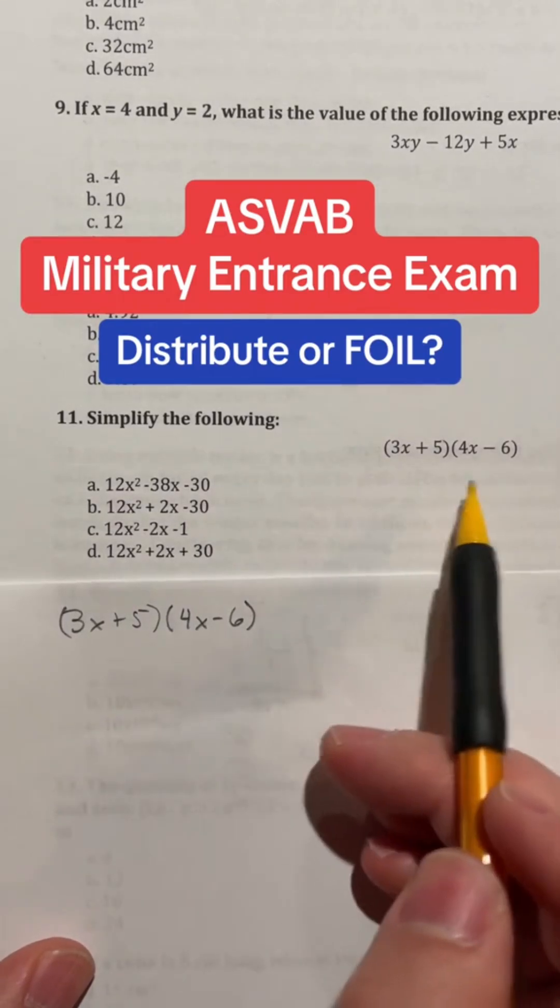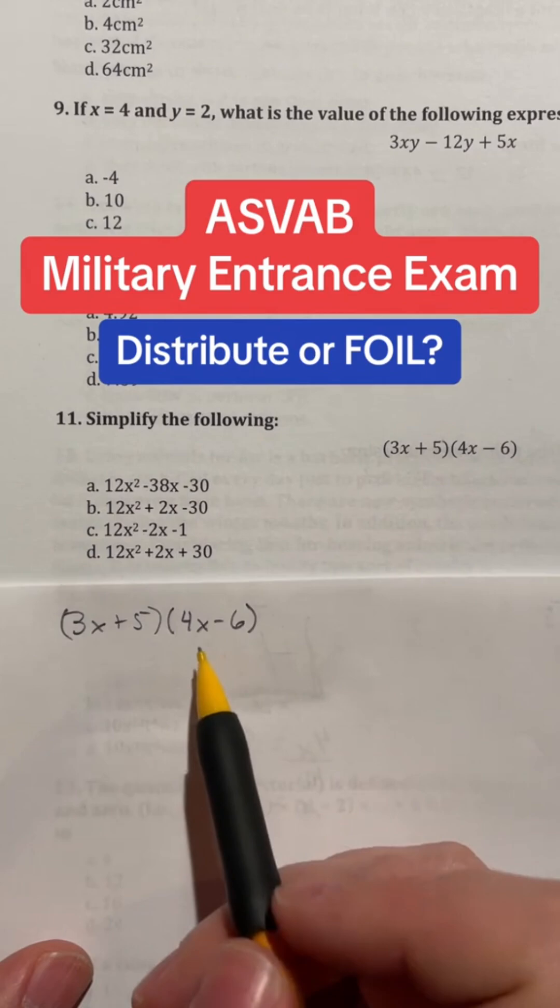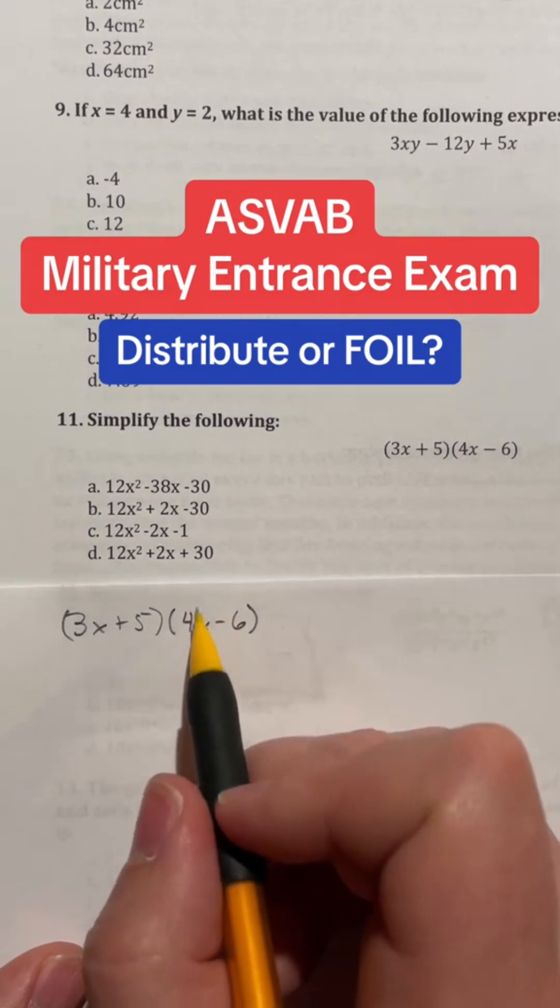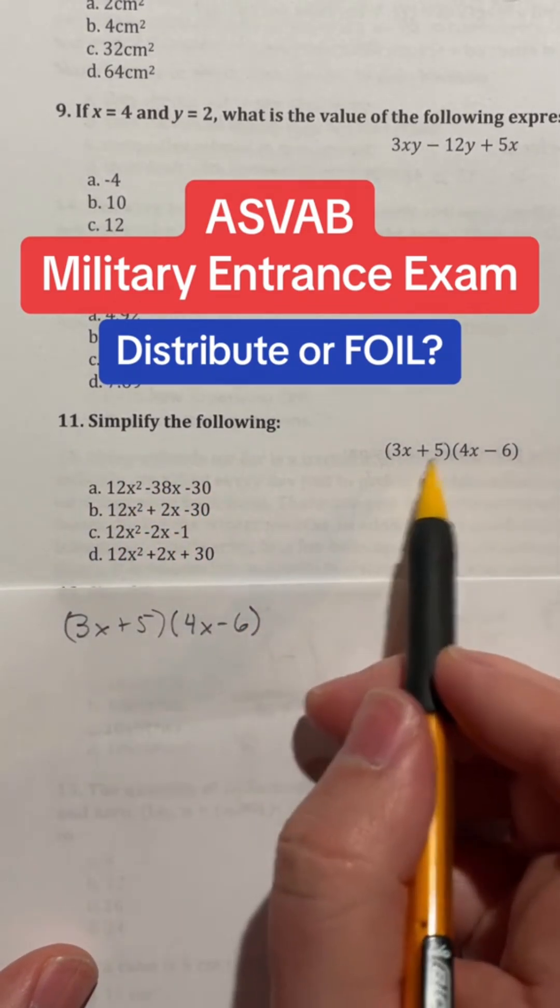Number 11 says to simplify the following and it gives us this right here, but I'm actually going to rewrite this down here so it's a little bit easier on the camera for us. Essentially when we're simplifying, if we look at these, what it's asking us to do is distribute these two into one trinomial instead of two binomials.